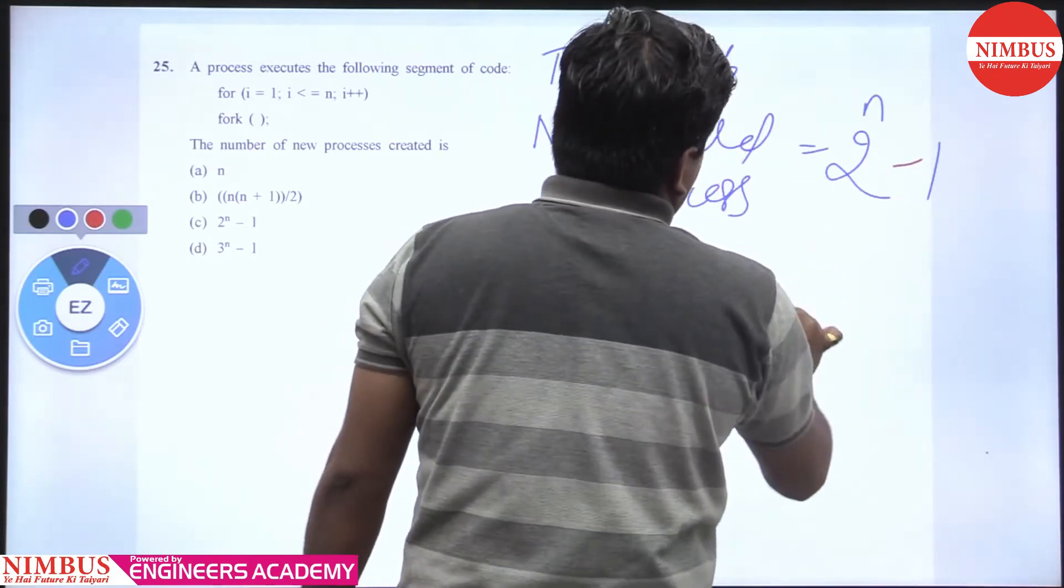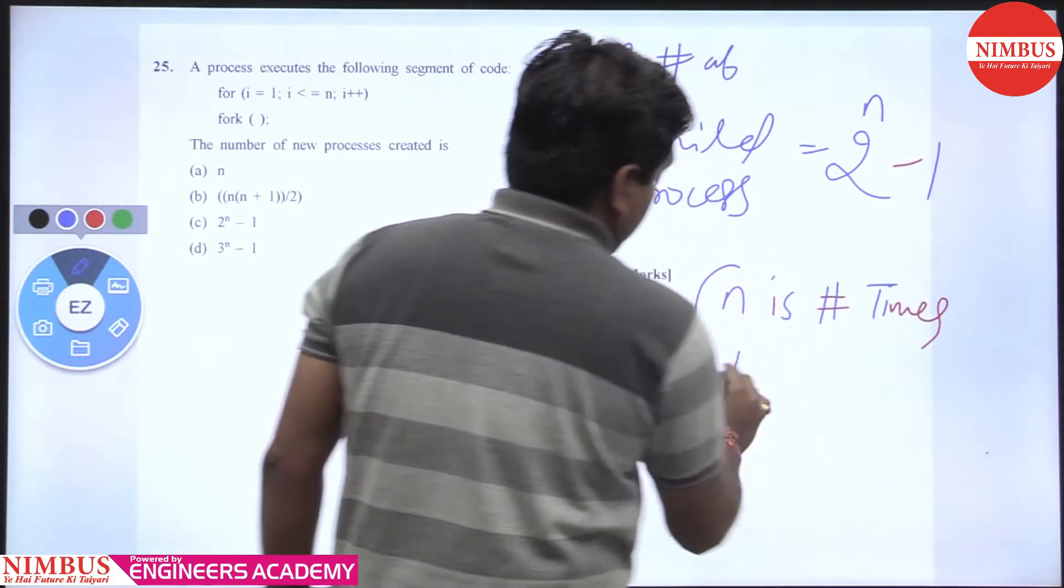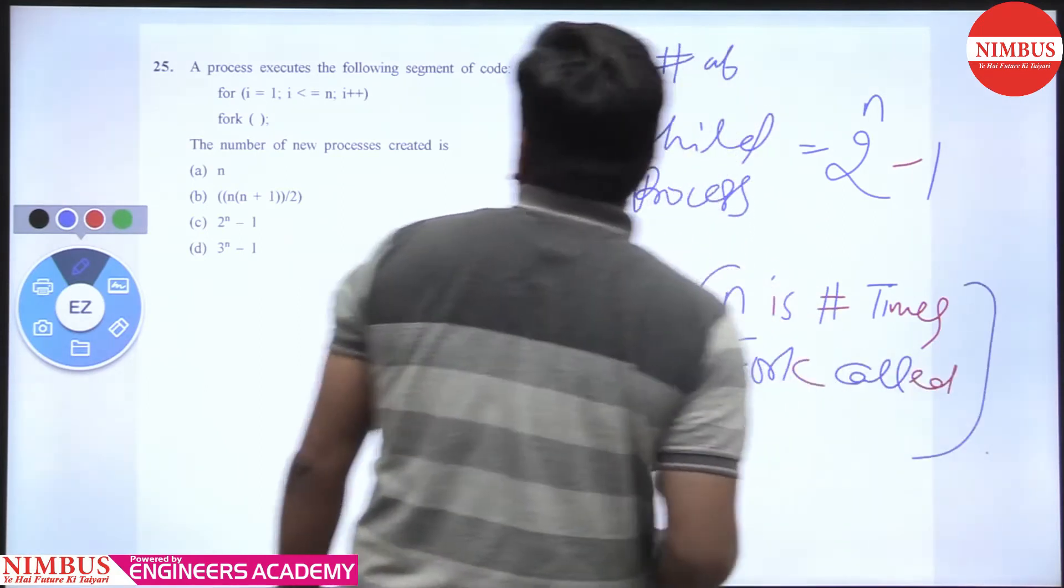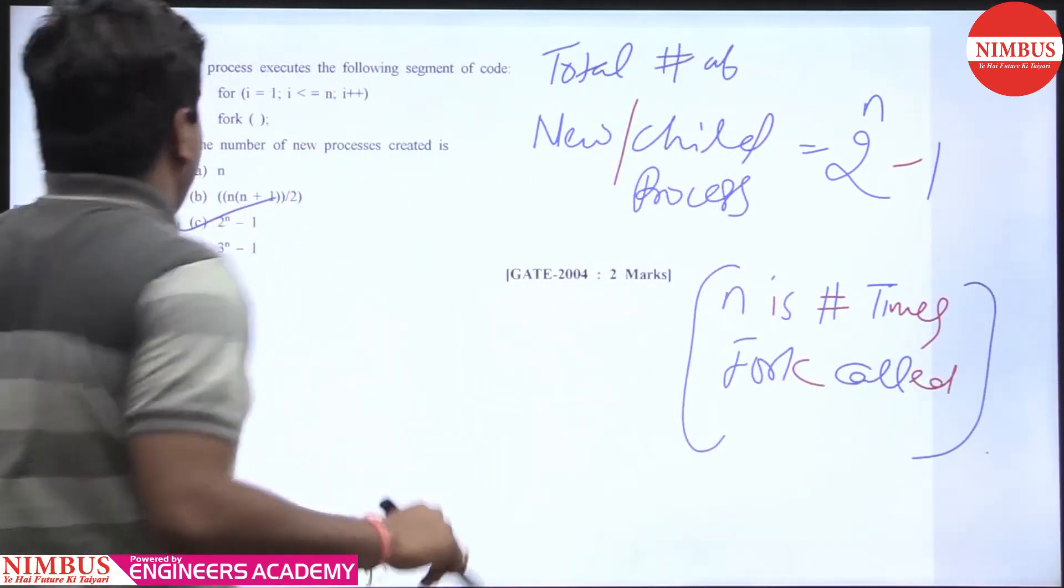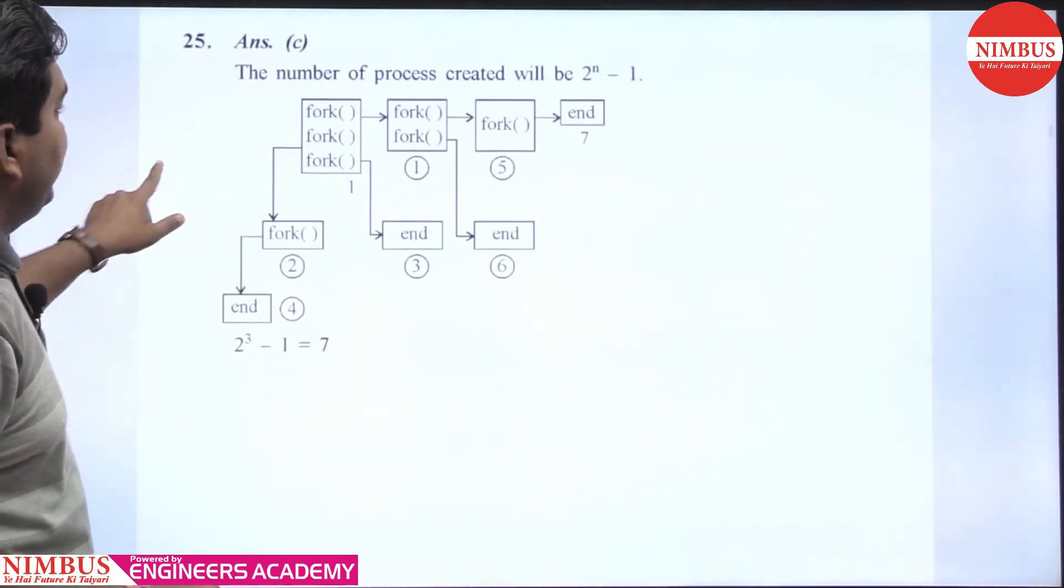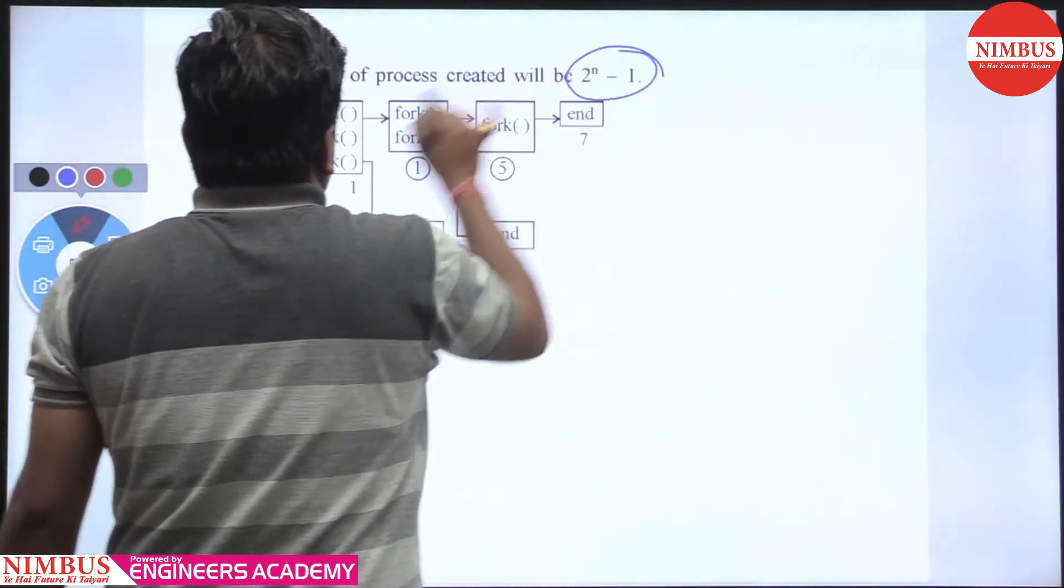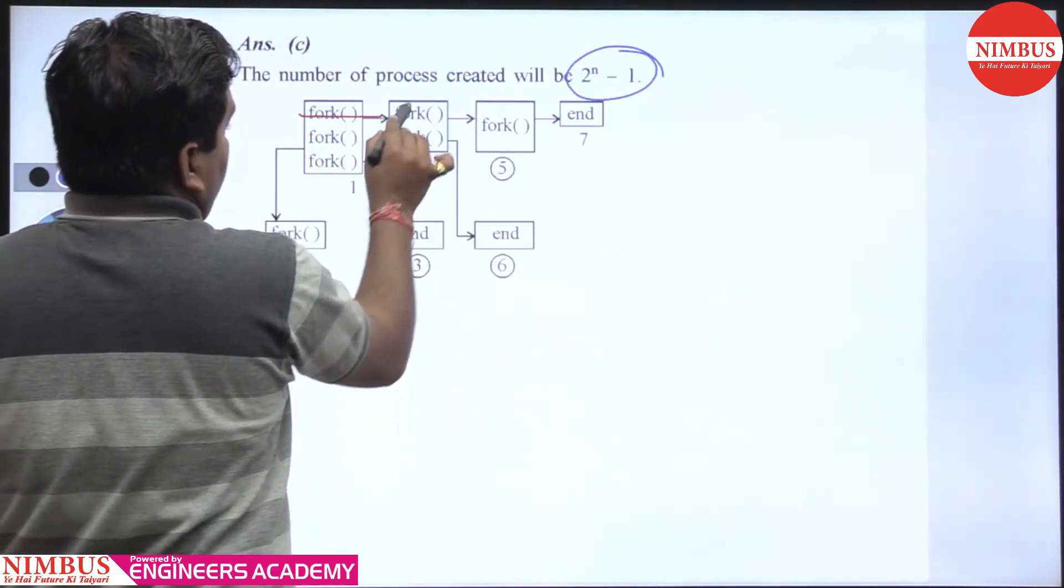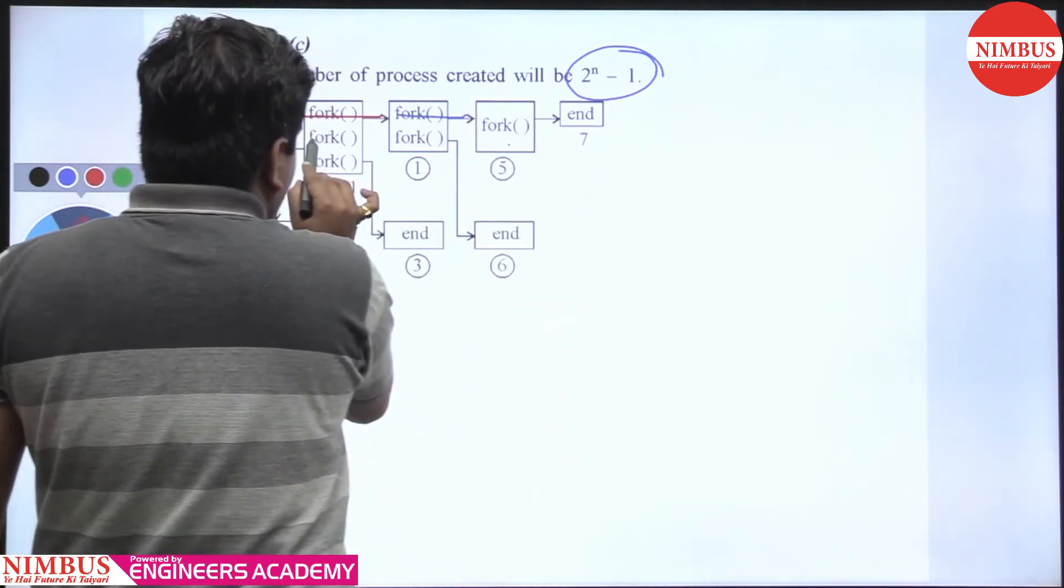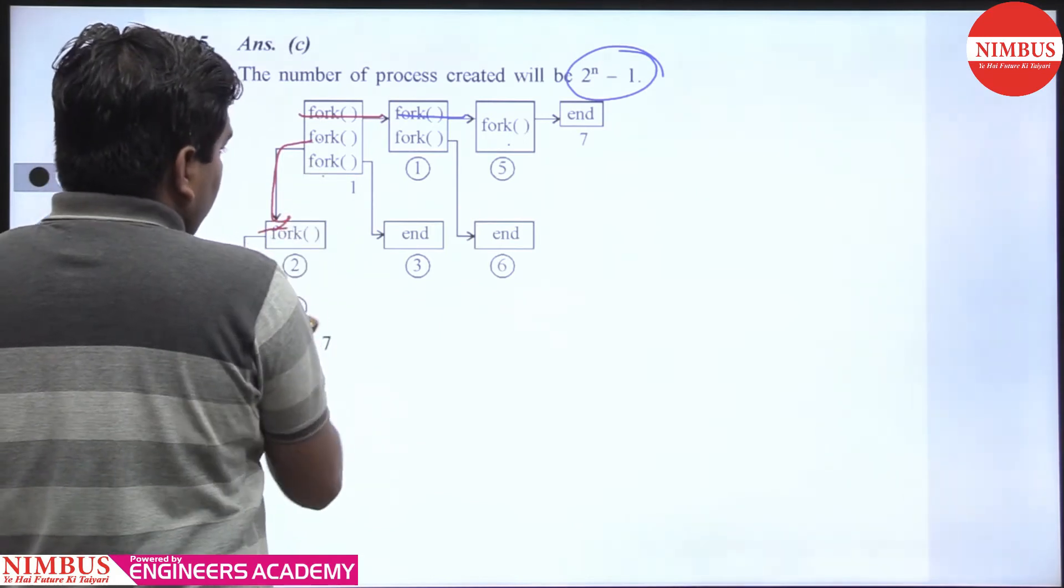The answer is 2 raised to power n minus 1. Because there are 3 forks: this fork creates these 2, then executes this one. What about these forks here? The total number of child processes is: